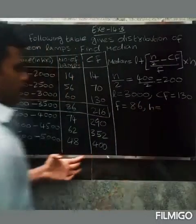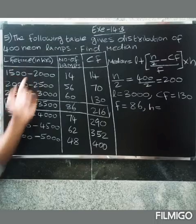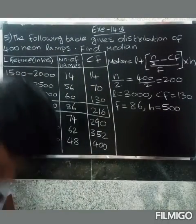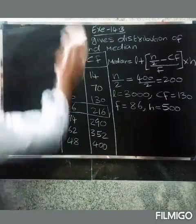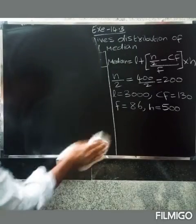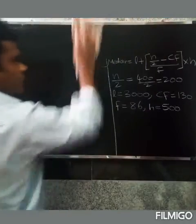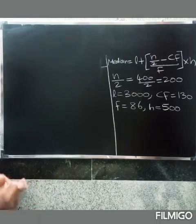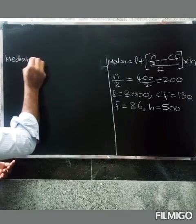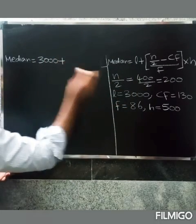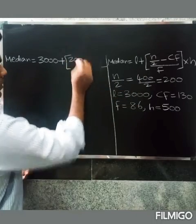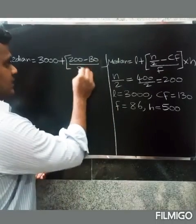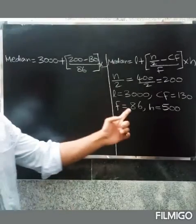So next h order value, 3500 minus 3000, the difference is 500. So h is 500. So just type of values now substitute into the formula. So median equal to L value 3000, plus n by 2, 200, minus cf value 130, divided by f value 86, into h value 500.